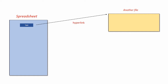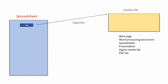Here's the list of what we can link to: a web page, a document on our system such as a word processing document, a spreadsheet, or a presentation. We can also link to any kind of digital media file on your computer. And something I found pretty valuable — you can link to a PDF file. Anything in your spreadsheet can hyperlink to any one of those things, and every one of them has value. You can use them to do some very powerful things.